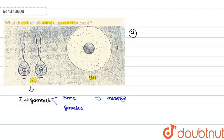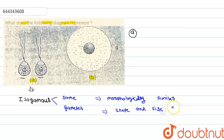They are morphologically similar, and their shape and size are also the same. In the diagram, we cannot differentiate whether it is male or female gametes, because the shape and size of both gametes are the same. Both have two flagella and the structure and morphology are totally the same.